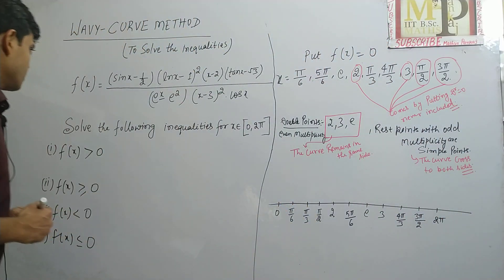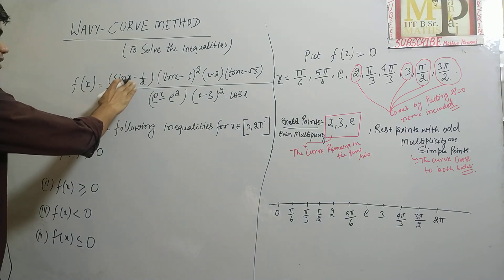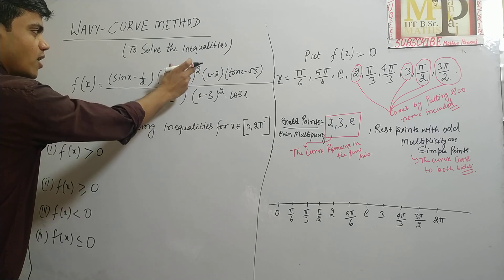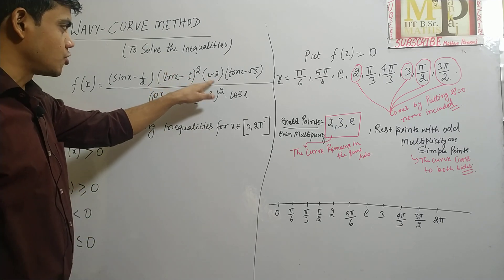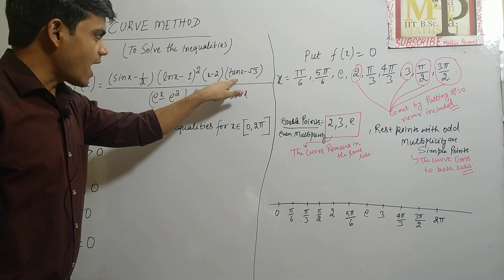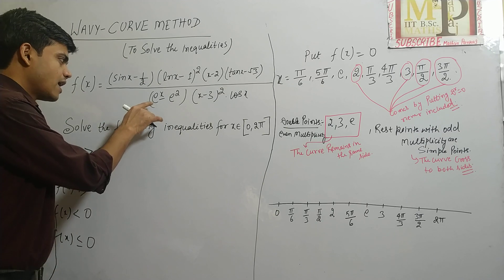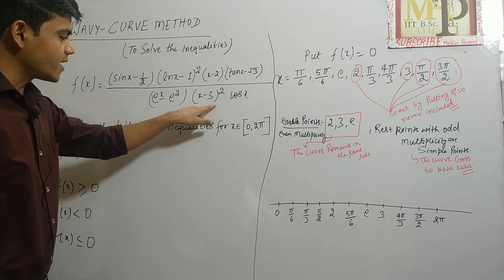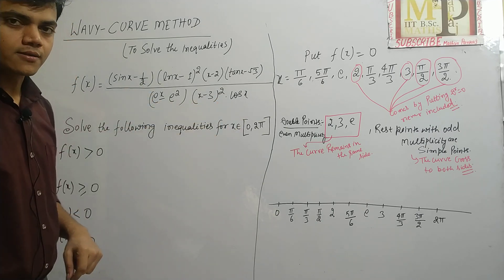So, what is the question? The function f(x) equals (sin x − 1/2)(ln(x−1))²(x − 2)(tan x − √3) upon (e^x − e²)(x − 3)² · cos x.